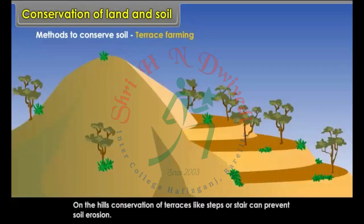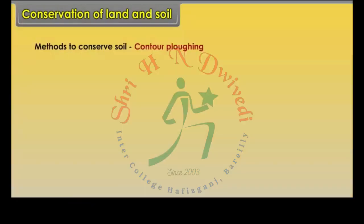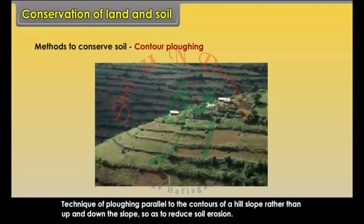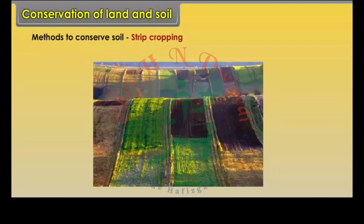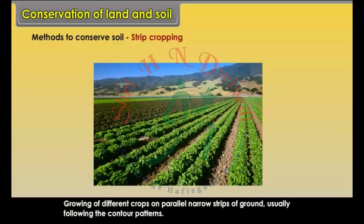Terrace farming: on the hills, construction of terraces like steps or stairs can prevent soil erosion. In this way, the speed of the flowing water is reduced and there is less soil erosion. Contour ploughing: technique of ploughing parallel to the contours of a hill slope rather than up and down the slope, so as to reduce soil erosion. Strip cropping: growing of different crops on parallel narrow strips of ground, usually following the contour patterns.